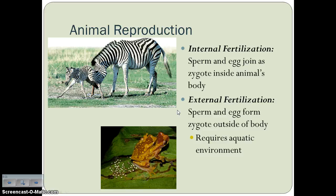Sexual reproduction can happen internally or externally. Internal fertilization is where the sperm and egg join as a zygote — a fertilized egg — inside of the animal's body. External fertilization is where the sperm and egg form the zygote outside of the body. Most aquatic animals have external fertilization because it requires water — the female releases the eggs, the male releases the sperm, and in the water the sperm swim their way over to the egg to fertilize it.